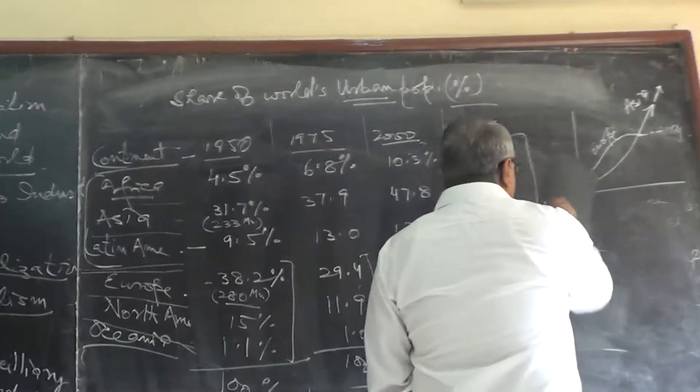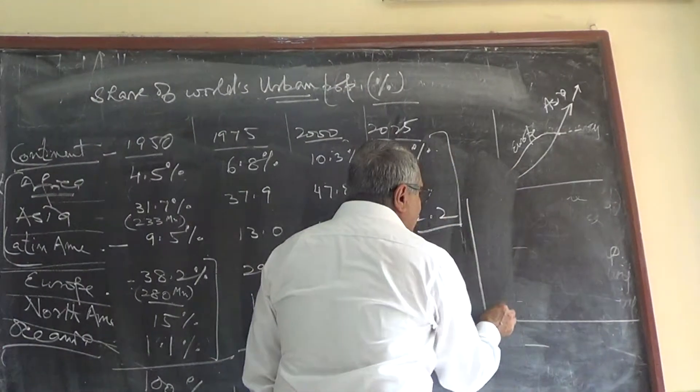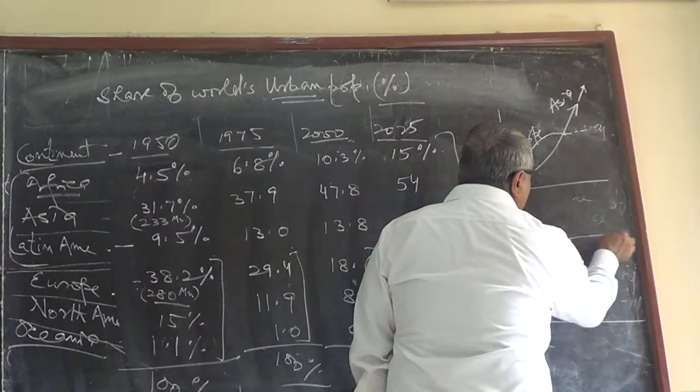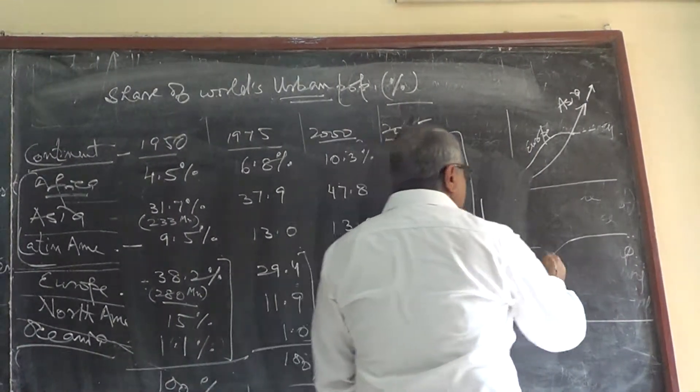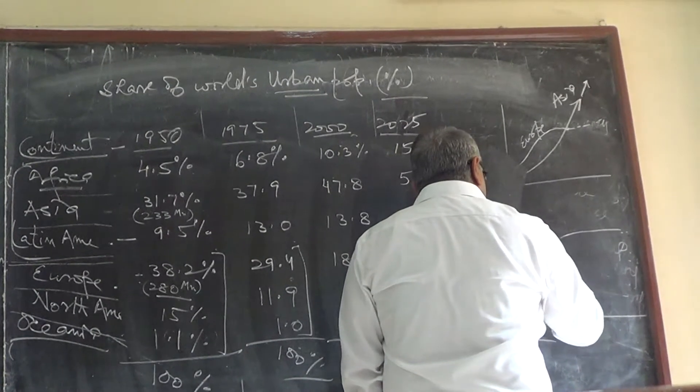But the urban population pattern is stabilized, almost stabilized. But in the developed world.